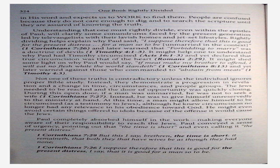The Jews needed to be reached, and the door of opportunity was quickly closing. During this open door, if a man was unmarried, he was not to seek a wife — 1 Corinthians 7:27. Instead, he was to give himself unreservedly to the ministry at hand. At this time, a man might allow himself to be circumcised as a testimony to Jews, although he knew circumcision no longer had any relevance in his obedience toward God. He might even avoid certain things offered to idols because of the offense it would cause the Jews. Paul completely absorbed himself in the work, making everyone aware of their responsibility to reach the Jews. Paul conveyed a sense of urgency, pointing out that the time is short, and even calling it the present distress. 1 Corinthians 7:29 — but this I say unto you, the time is short. It remaineth that both they that have wives be as though they had none. 1 Corinthians 7:26 — I suppose therefore that this is good for the present distress. I say that it is good for a man so to be.